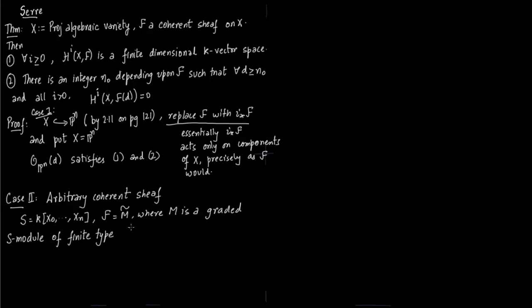M is a graded S-module of finite type, so it will have a set of generators with corresponding degrees, and these are n1 to nr, the homogeneous degrees of these generators.